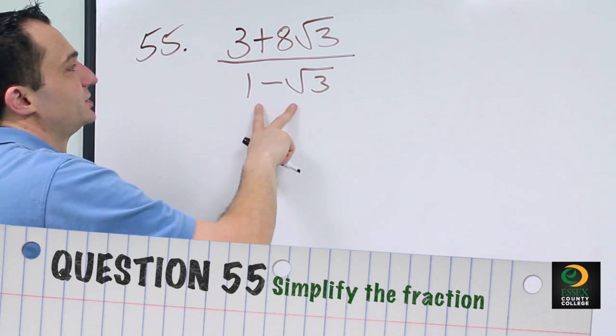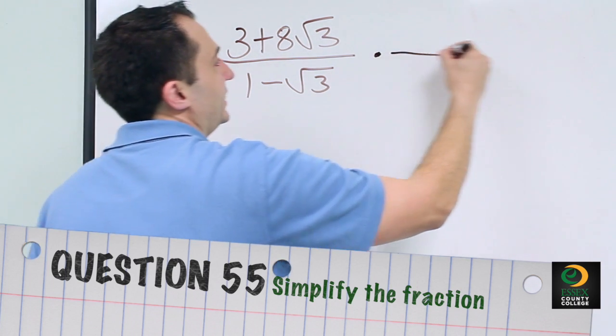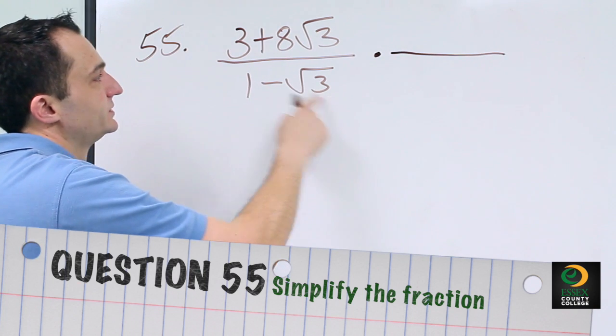But since this denominator has two terms, you have to multiply top and bottom by the conjugate. And the conjugate simply is the same terms, opposite signs.